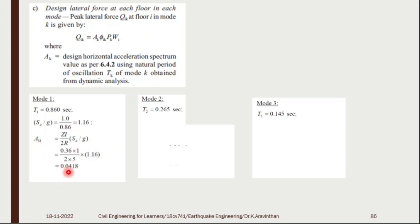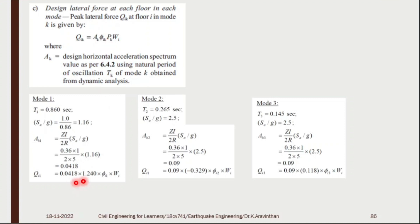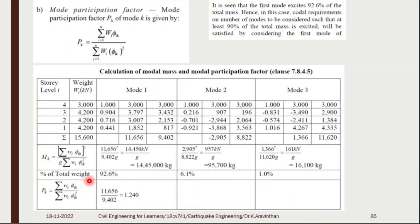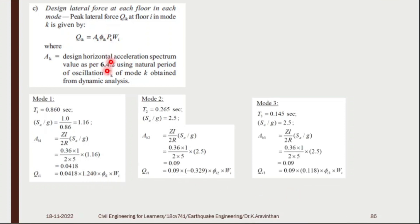For the second mode, SA/g = 2.5 and the rest of the values (Z, I, R) remain the same, giving A_k = 0.09. Now compute Q_k = A_k × P_k × φ. With A_k = 0.0418 and P_k = 1.240, and for the second mode P_k = 0.329, and third P_k = 0.118, you can write the Q values for all modes.